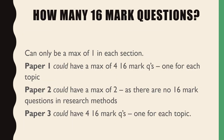In terms of how many 16 mark questions could there be — students always ask: how many 16 mark questions will there be in paper one? Well, there could be four, because you could have a 16 mark question in every single section, since every section on paper one is out of 24 marks. So there could be one for each topic. For paper two, it could in theory be a max of two, because you've got approaches and biopsych — you don't have 16 mark questions in research methods, the maximum mark there is going to be 12. And in paper three, you could in theory have four. Now it's unlikely, but that's not to say it's not a possibility.